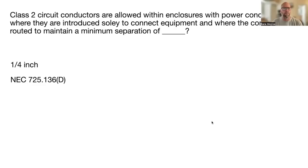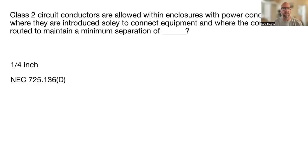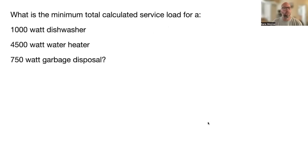What remedy would not be permissible to stop an objectionable current over an electrical system using the earth as a ground fault path? Remember, the earth is a horrible ground fault path.